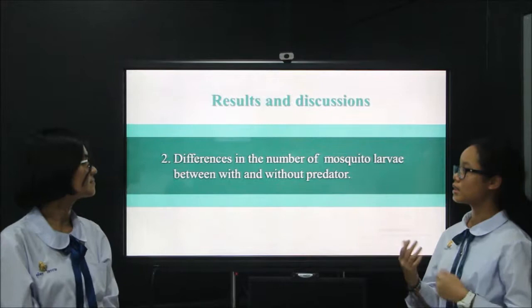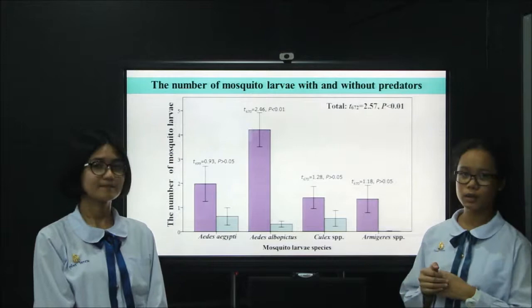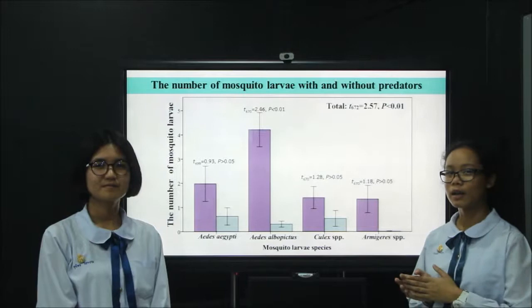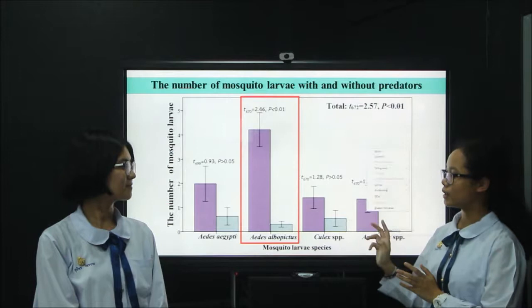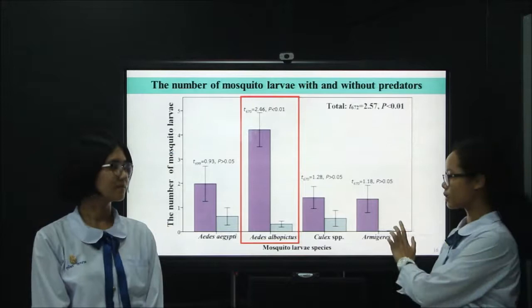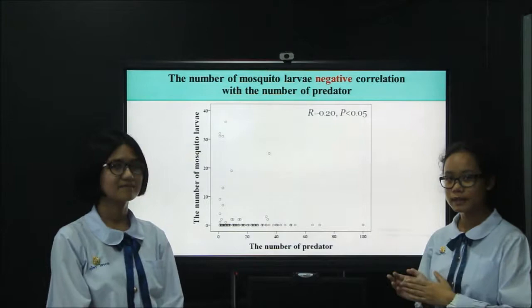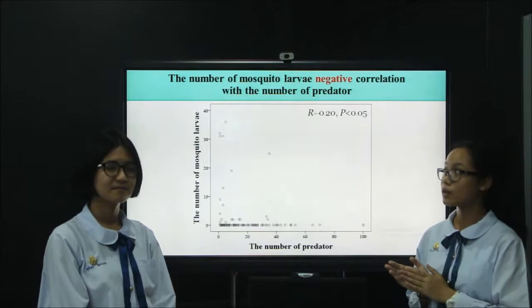Next, we studied the difference in the number of mosquito larvae between containers with and without predators. The bar chart shows the number of mosquito larvae with and without predators. We found that the number of mosquito larvae in containers without predators is higher than in containers with predators. The prominent species is Culex. If there are higher numbers of predators, the number of mosquito larvae will be lower, meaning that mosquito larvae count has a negative correlation with the number of predators.